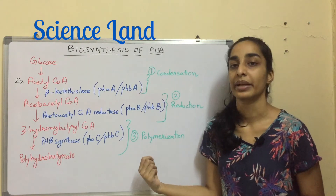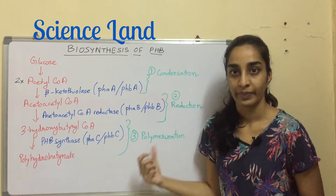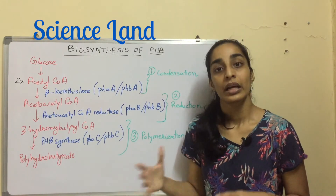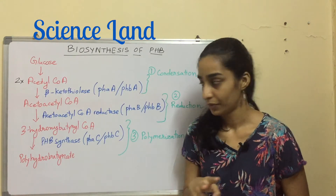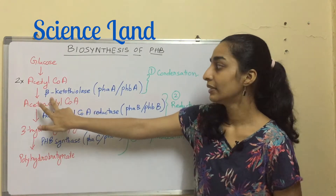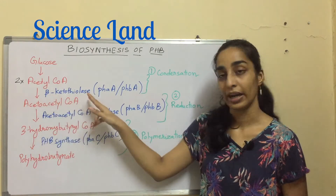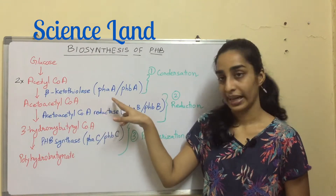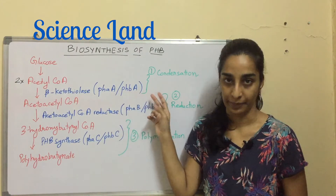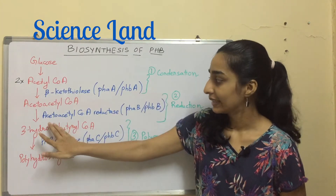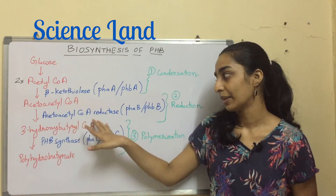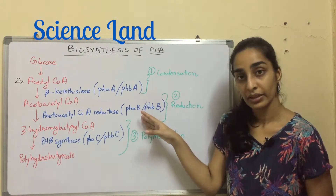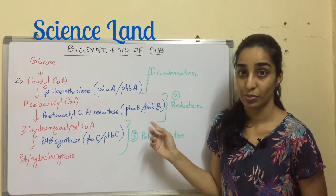The entire biochemical cycle involves three enzymes. The first is beta-ketothiolase, also known as PhaA or PhbA. The second enzyme is acetoacetyl coenzyme A reductase, known as PhaB or PhbB.